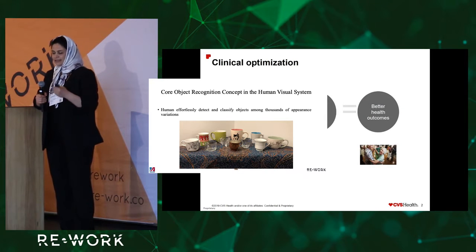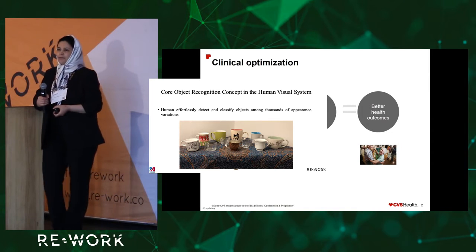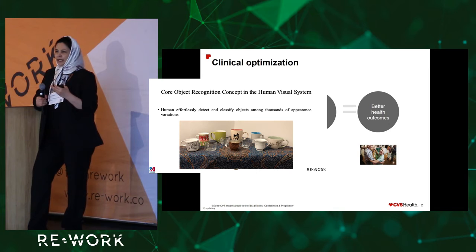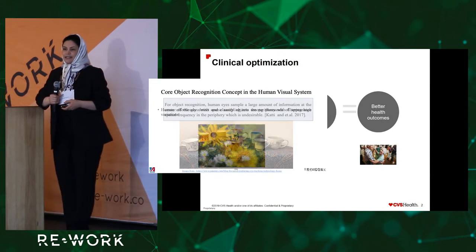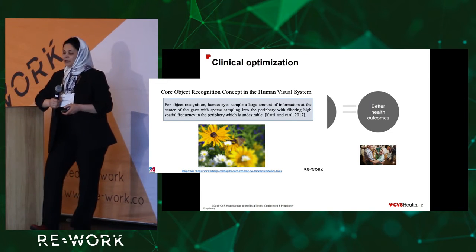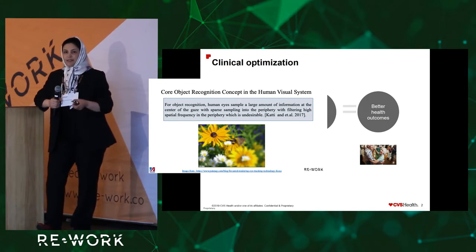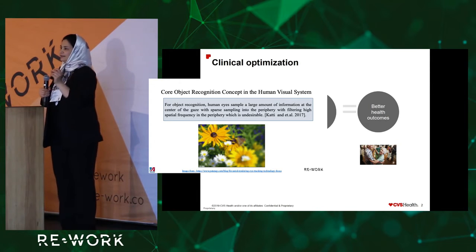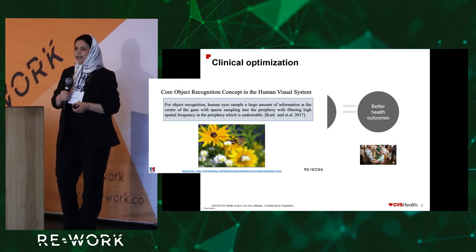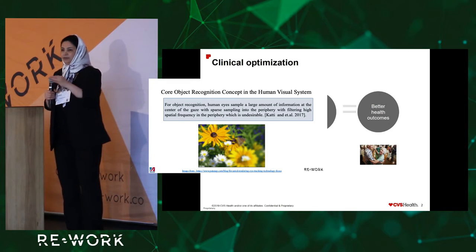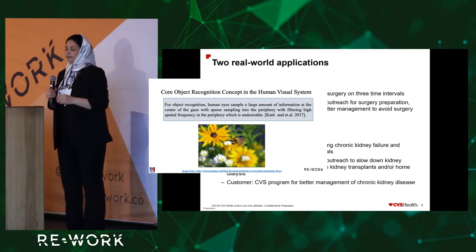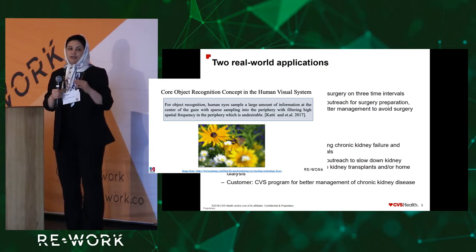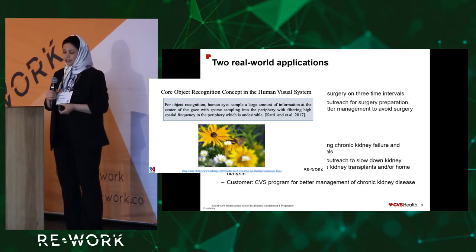I am most interested to introduce some conceptual concepts based on evidence achieved in many research studies. One line of evidence is that humans, for object recognition, sample a large amount of information from the center of gaze with increasingly sparse sampling into the periphery. This means we filter high spatial frequencies into the periphery, which is undesirable because it slows down the process of object recognition.